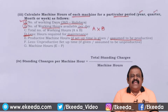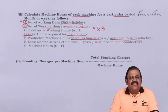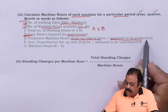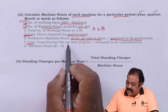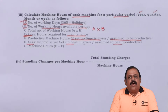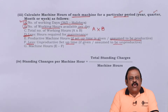Each machinery requires some time for its setup — you cannot immediately start production when the day begins. If setup time is considered productive, include it in productive machine hours. If setup time is assumed to be unproductive, deduct it. Similarly, if machineries are not properly handled by workers, there may be unnecessary waste of time — this unproductive time is also required to be deducted from the total hours.